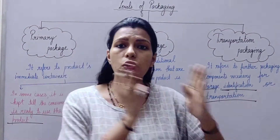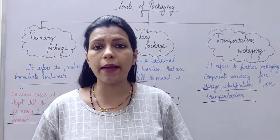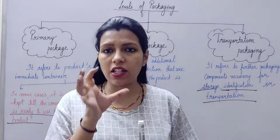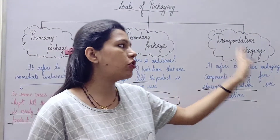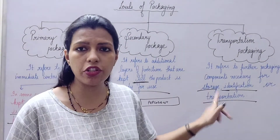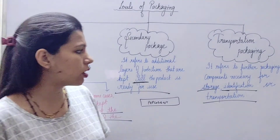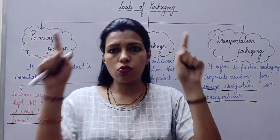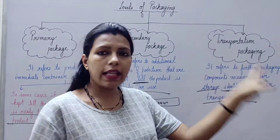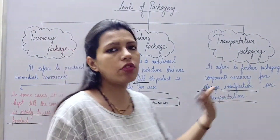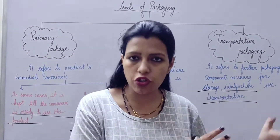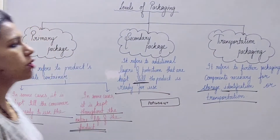When products are moved from a manufacturer to a wholesaler, or from a wholesaler to a retailer, they are packed in big corrugated boxes — that is transportation packaging. It also serves for storage, and you can easily identify the whole box, for example as Pepsodent's box. When we have many units to move from one place to another, we use transportation packaging.